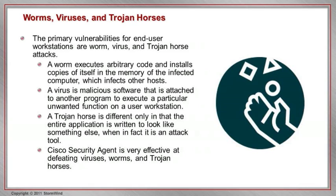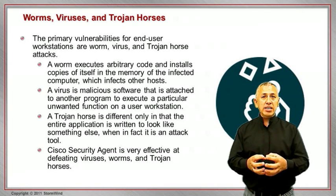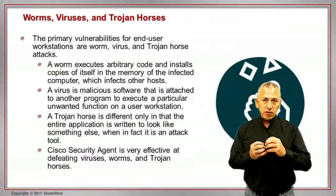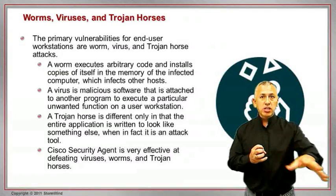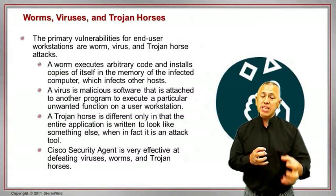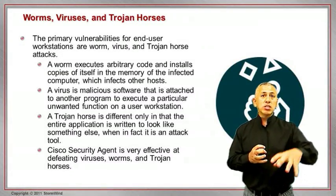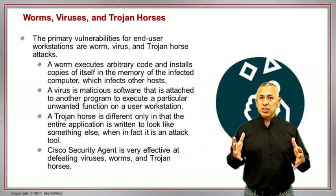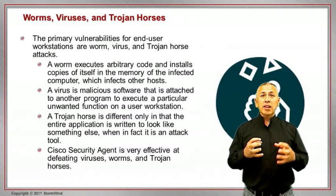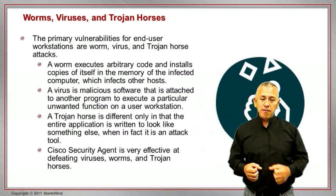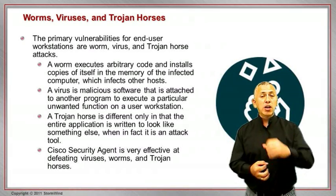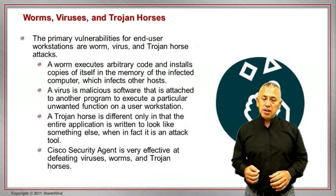Once a device becomes infected with a worm, that worm will then propagate itself. It'll either send copies of itself onto the network to specific IP addresses on the same segment so those devices get infected, or it'll do something more sinister like go into your email, find your contact list, and email a copy of itself to everybody on your contact list.